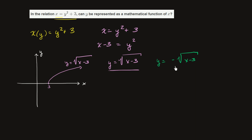And this over here, y is equal to the negative square root of x minus 3, is going to look something like this. It's going to be essentially the mirror image if you flip over the x-axis. So it's going to look something like this. y is equal to the negative square root of x minus 3.